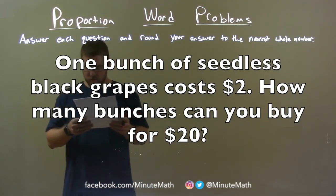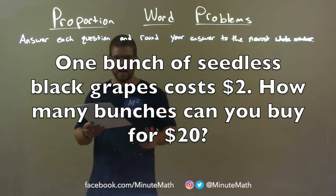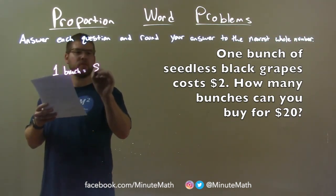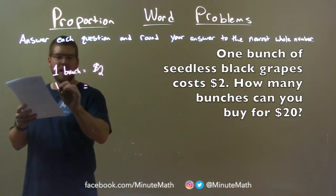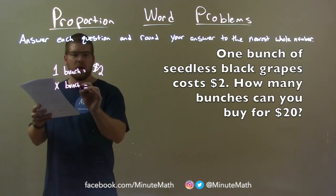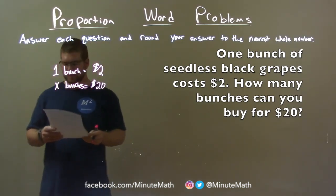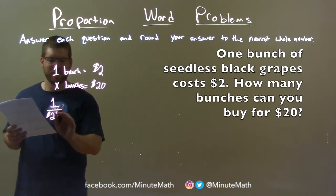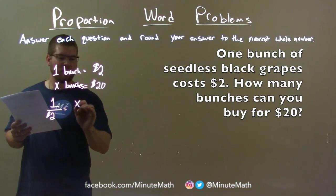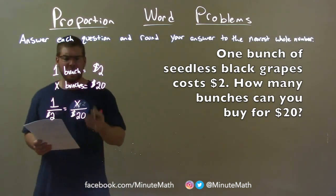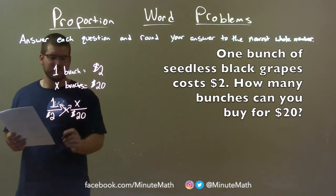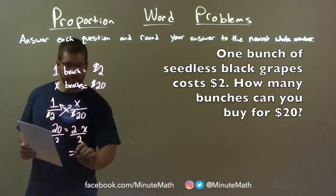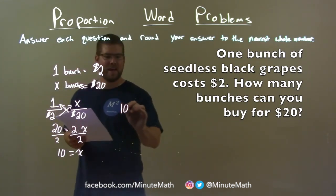One bunch of seedless black grapes costs $2. How many bunches can you buy for $20? Let's set up a proportion. One bunch costs $2, and X bunches can be had for $20. So: 1 over $2 equals X bunches over $20. Cross-multiplying: 1 times 20 is 20, so $20 equals $2 times X. Divide both sides by 2 to get X by itself, and X equals 10. Our final answer is 10 bunches.